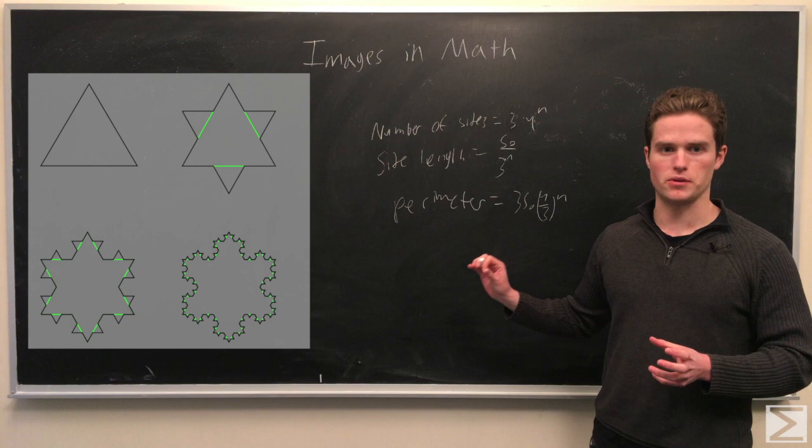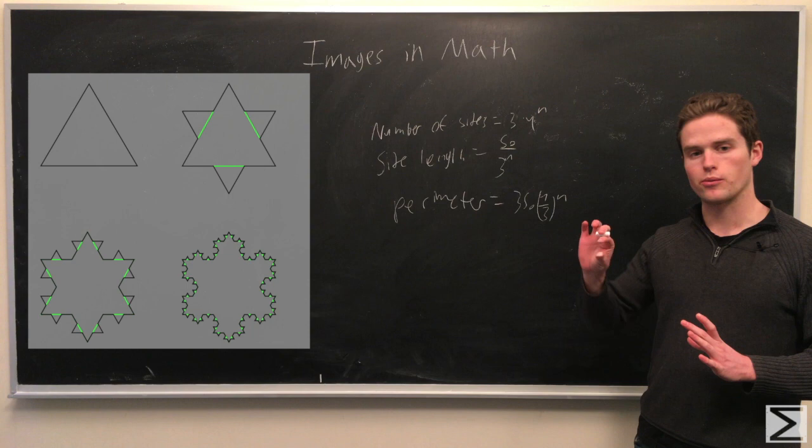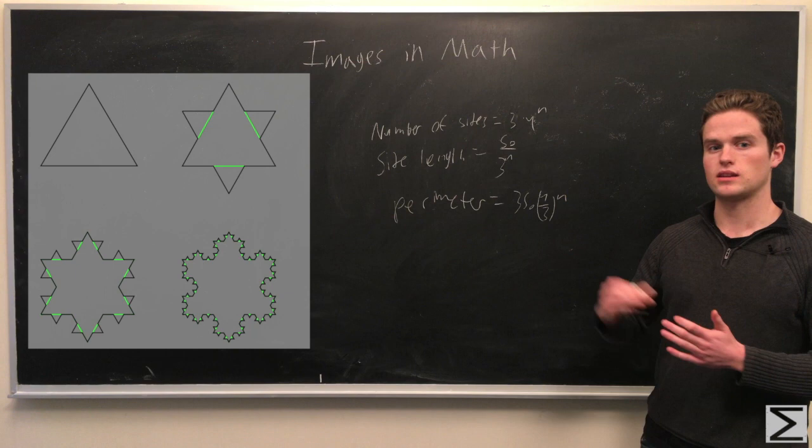So the number of sides, we start with 3. Note that when we remove a middle third and add 2, this one side becomes 4 sides, and the same for each other side. So really, each step, we multiply the number of sides we have by 4.